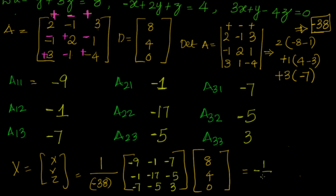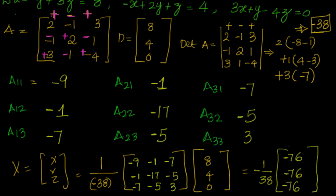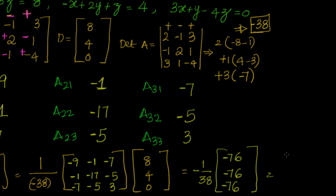This gives us minus 1 over 38 times the cofactor matrix times D. Computing row by row: row 1 gives minus 9×8 plus minus 1×4 = minus 72 minus 4 = minus 76; row 2 gives minus 1×8 minus 17×4 = minus 8 minus 68 = minus 76; row 3 gives minus 7×8 plus minus 5×4 = minus 56 minus 20 = minus 76. The negative signs cancel, and 76 over 38 = 2. Therefore x = 2, y = 2, z = 2.